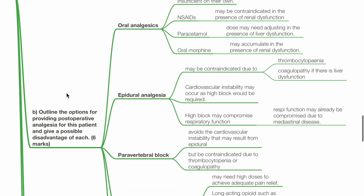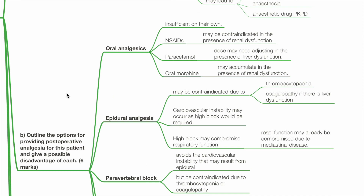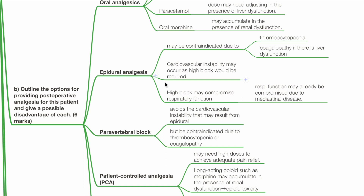Question B: Outline the options for providing post-operative analgesia and give possible disadvantages of each. Oral analgesics are insufficient on their own. NSAIDs may be contraindicated to avoid renal dysfunction. Paracetamol dose may need adjusting in the presence of liver dysfunction. Oral morphine and its active metabolites may accumulate in the presence of renal failure. Epidural analgesia may be contraindicated due to thrombocytopenia or coagulopathy; cardiovascular instability may occur as a high spinal block would be required, and a high block may compromise respiratory function already affected by mediastinal disease.